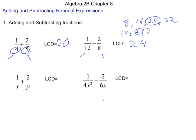When we get into variables like 1 over x plus 2 over y, the process is really going to be the same thing. We're just going to take x and y and multiply them together, so our least common denominator is going to be xy. To do that problem, we would multiply the first fraction by y over y and the second by x over x.